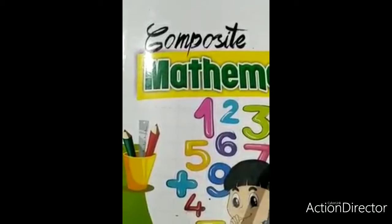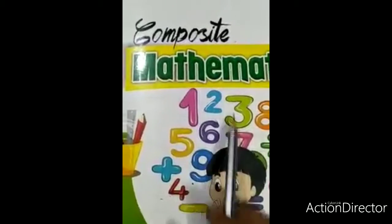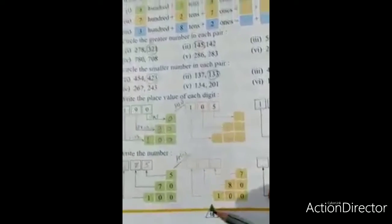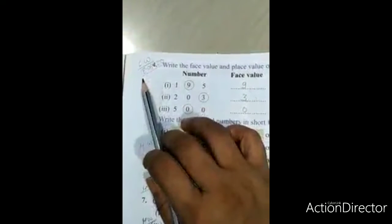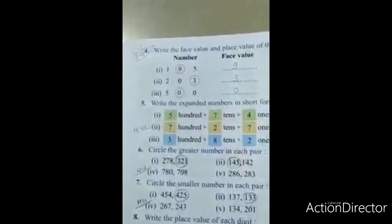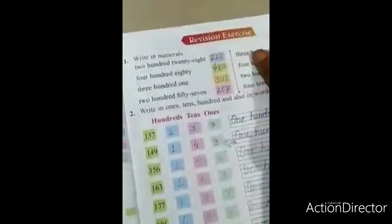All of you, everyone take out your math book, Composite Mathematics. Open to page number 18. Write here CW and today's date, 18-6-20. In last class we learned the revision exercise, so today we will continue it.